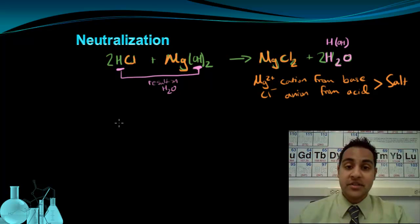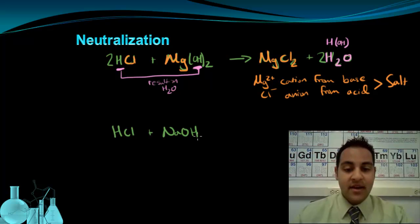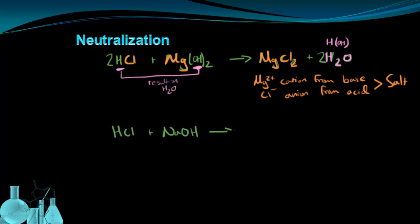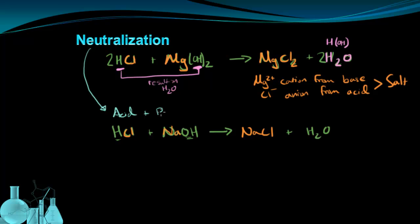Let's look at another example of a neutralization reaction. We'll take hydrochloric acid again and combine it with another very common strong base, NaOH. Based on what we just saw, we can walk through and see what our products are going to be. We know the H⁺ and the OH⁻ are going to form water — one H⁺ and one OH⁻ will form one water. For the salt, we have a chloride ion and a sodium ion, giving us sodium chloride, which is simply table salt.